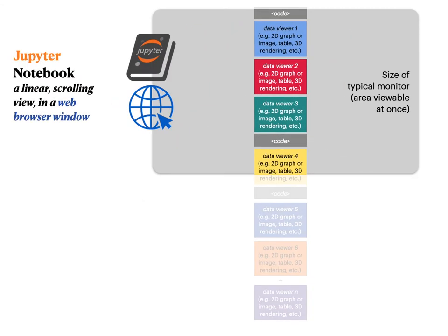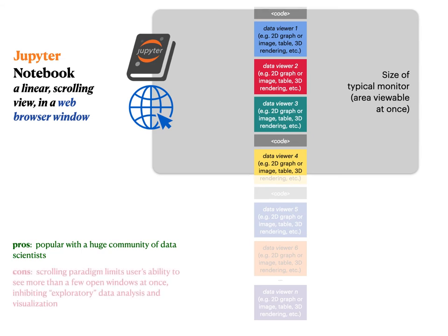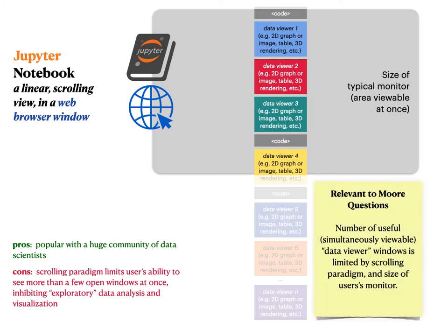Here's Jupyter Notebook in a very schematic way. It has this linear scrolling view, but importantly it runs inside of a web browser and is hugely popular with a giant community of data scientists. However, this scrolling paradigm means you can only see however many windows fit vertically in the area of the notebook you're looking at. If you're looking for real-time changes key to exploratory data analysis — as you make selections or change parameters — you can't see that happening in real time because those windows scroll off screen. The utility for exploratory data analysis is quite low, unfortunately, because of this limitation of how many windows you can see at once, all arranged vertically.